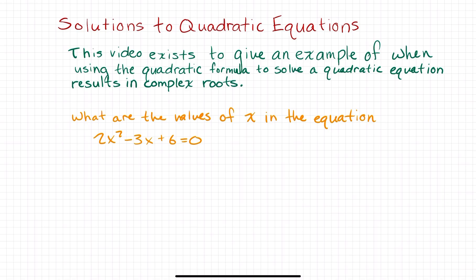So, this equation written in orange, 2x squared minus 3x plus 6 equals zero, should help us get what we want.